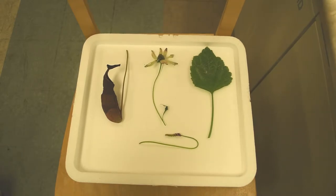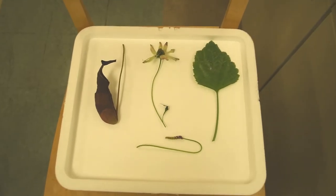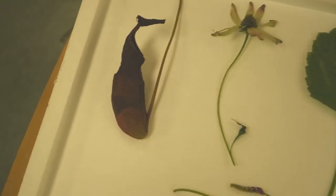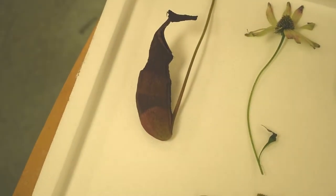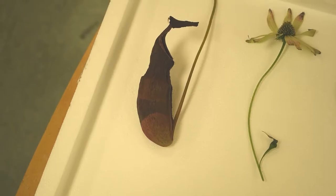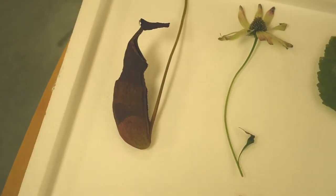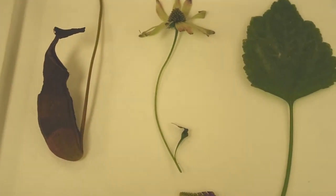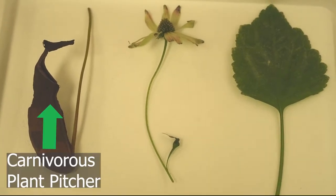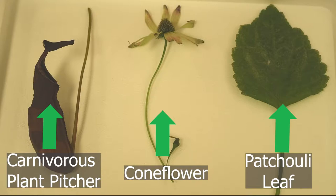In the case of something freezing, the comparatively warm liquids transfer their energy to the cold environment. This loss of energy from the liquid causes its molecules to slow, and it becomes a solid. Let's see what happens when we freeze things with liquid nitrogen. Here we have a carnivorous plant pitcher, a cone flower, and a patchouli leaf. These are various parts of plants that we are studying in the lab.